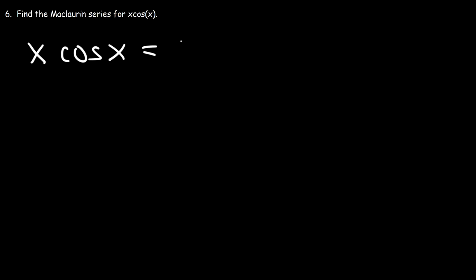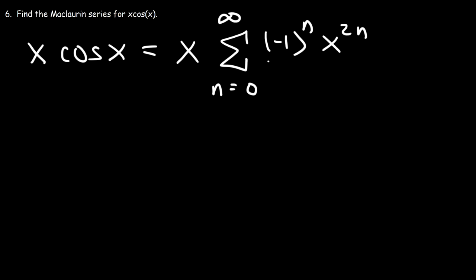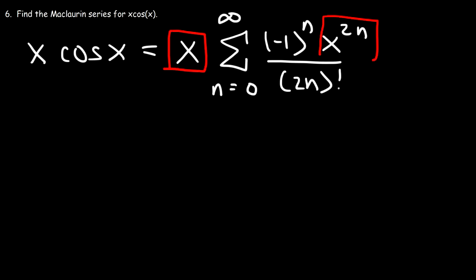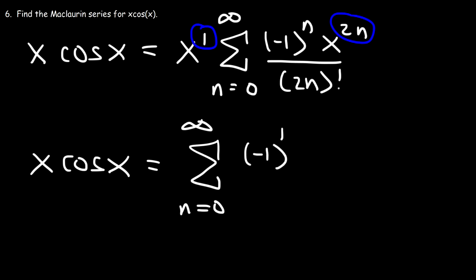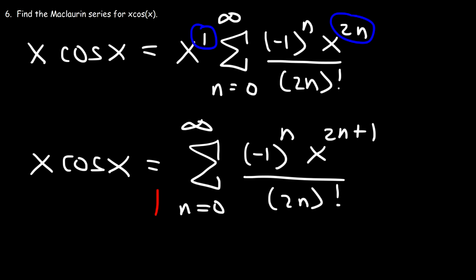Find the Maclaurin series for x·cos(x). Since cos(x) = Σ (−1)^n · x^(2n) / (2n)!, multiplying by x means multiplying x¹ by x^(2n), so we add exponents: 1 + 2n = 2n+1. Therefore x·cos(x) = Σ (−1)^n · x^(2n+1) / (2n)!.